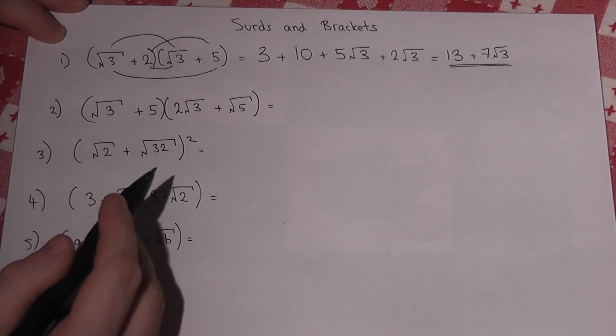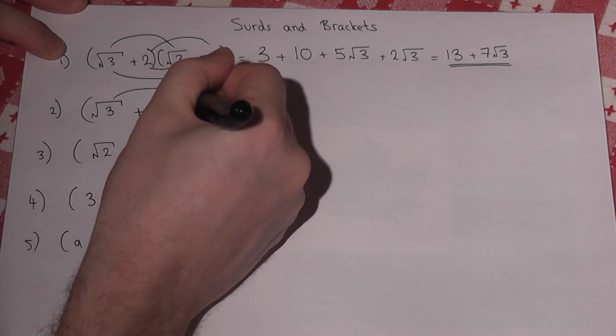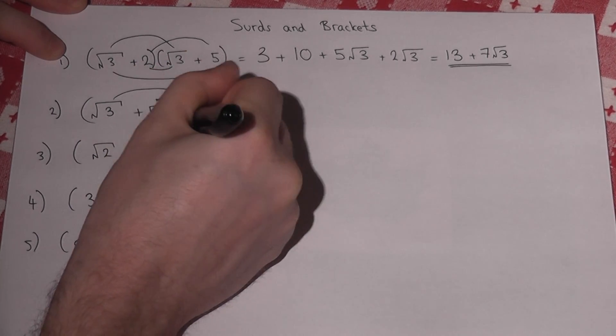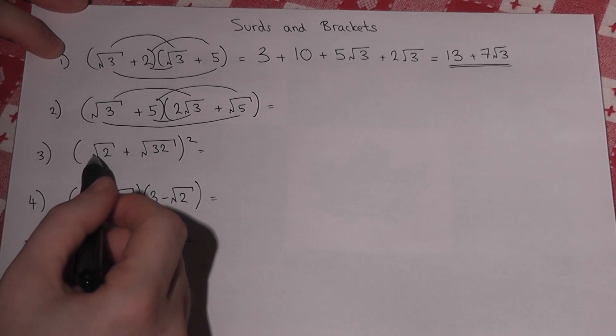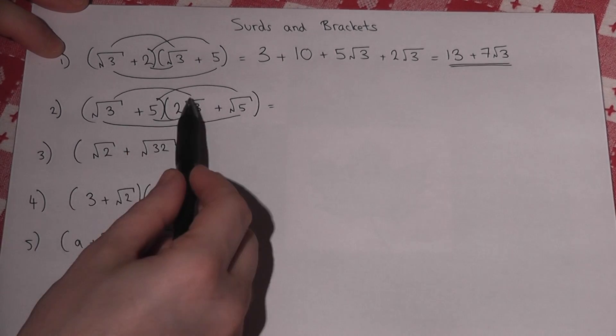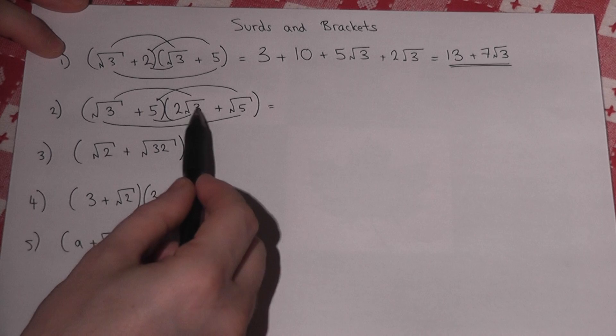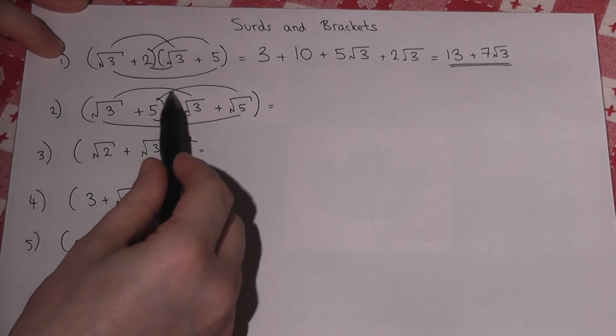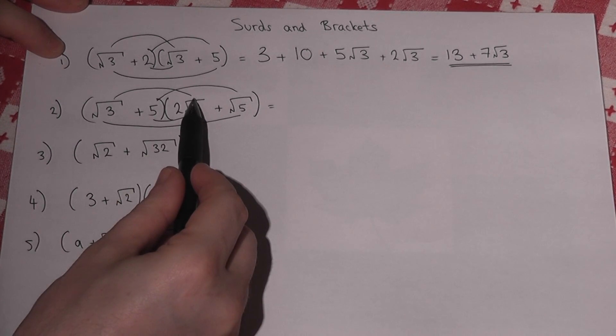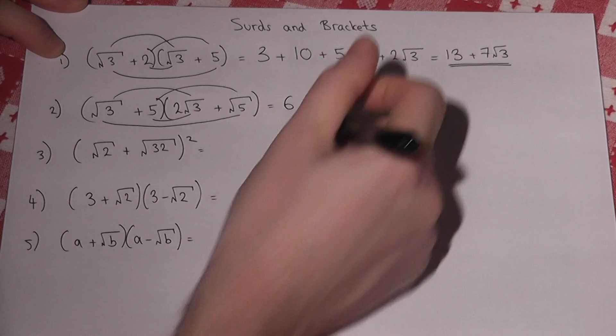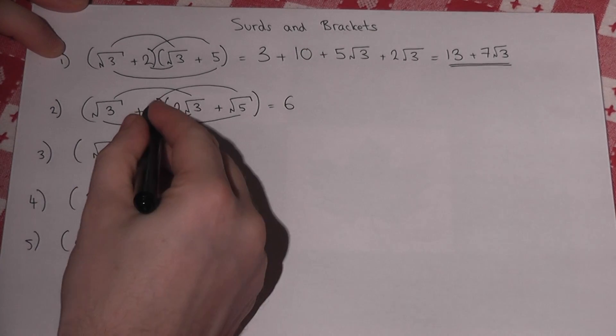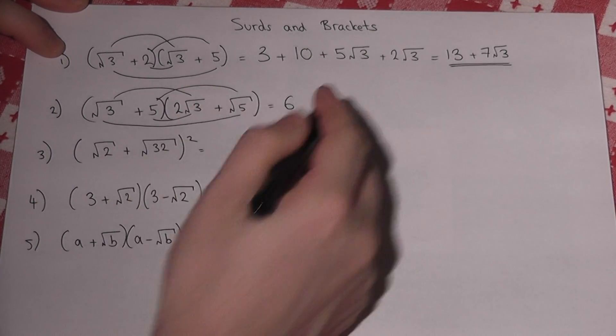So the second one, the same technique. I tend to draw the lines on. So, more careful now, we've got root 3 times 2 root 3. Well, root 3 times root 3 is 3, times it by 2, we get 6. This just gives us 5 root 5.